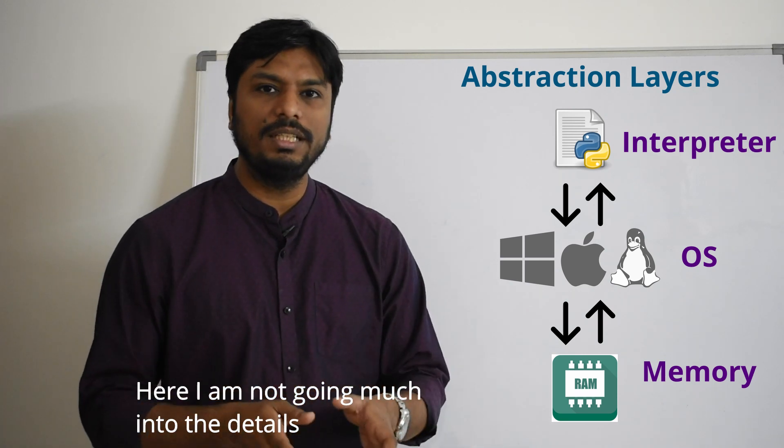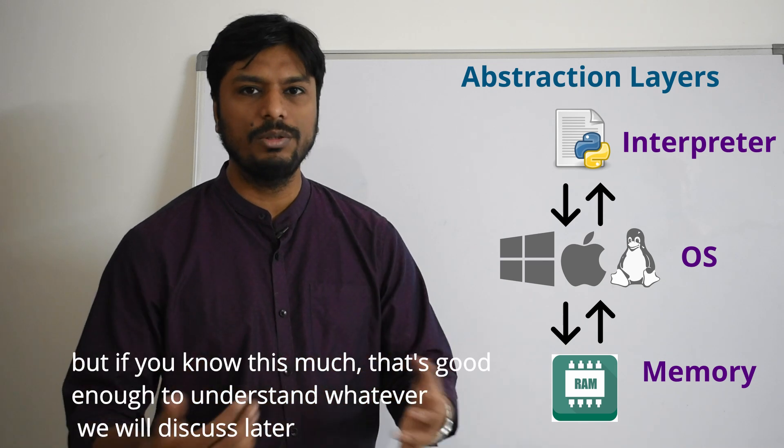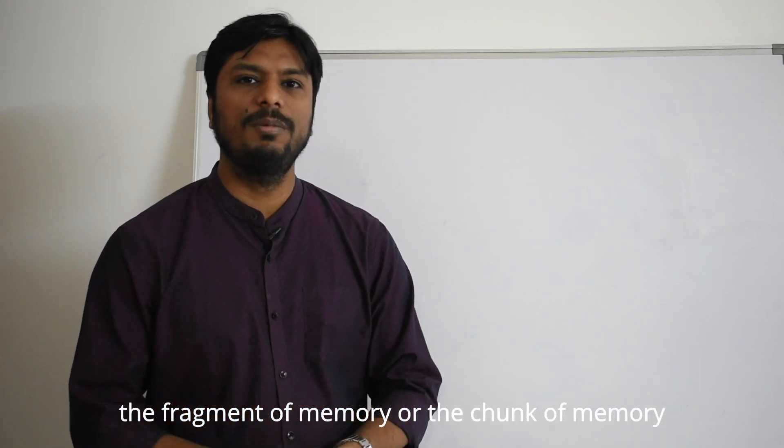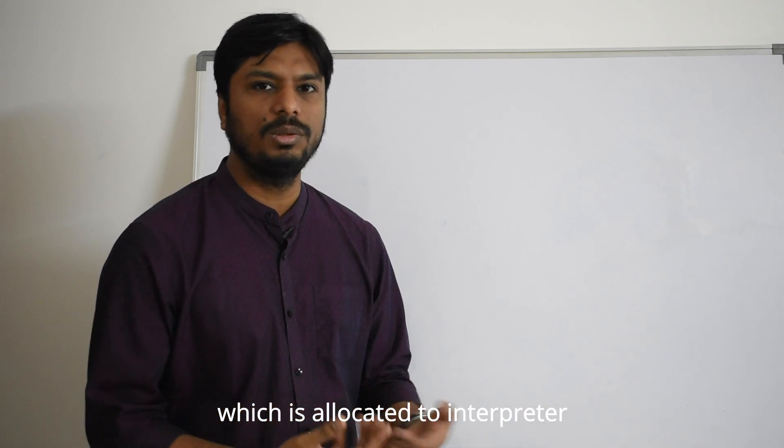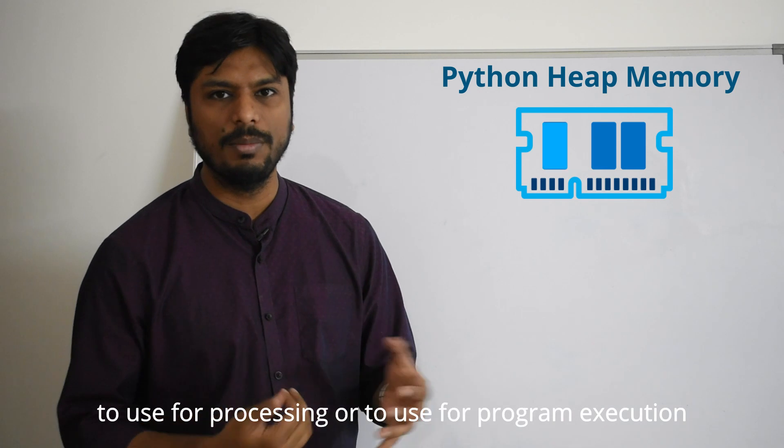I am not going much into the detail but if you know this much that's good enough to understand whatever we are going to discuss later. So the fragment of memory or the chunk of memory which is allocated to interpreter to use for its processing or to use for the program execution, it is called heap memory.